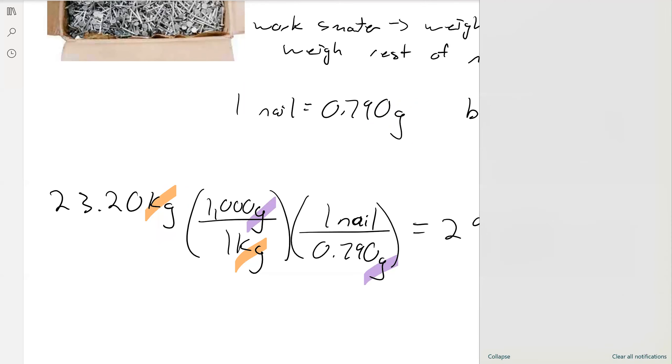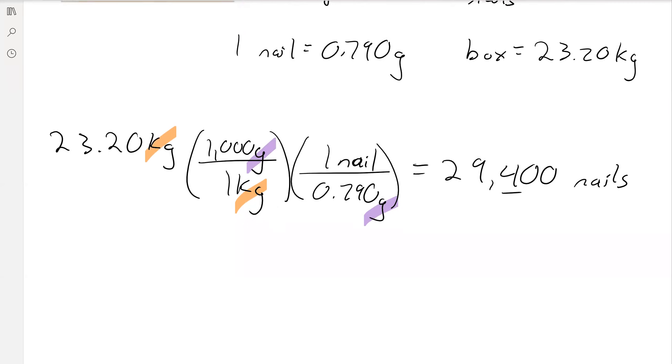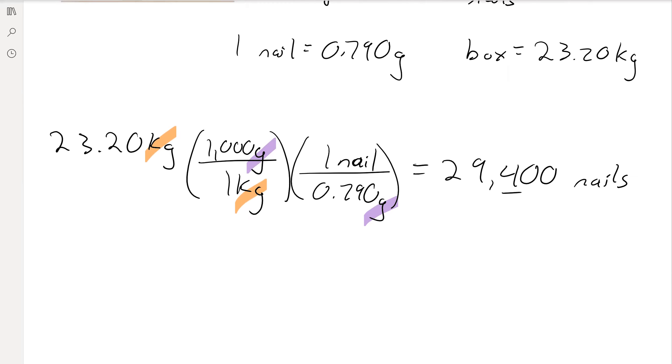So if you try to count those out by hand, it would really take you quite a long amount of time. But by simple weighing, you can count out large amounts of things very easily. And that's the whole point of the mole concept is that we cannot pick out individual atoms. So how do we count atoms in order to make sure that we have the right amount? Well, we simply weigh them.